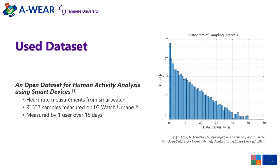To compare the considered methods, we applied them on a dataset called 'An Open Dataset for Human Activity Analysis Using Smart Devices.' The considered measurements include almost 92,000 samples measured on a smartwatch by one user over 15 days. On the right, you can see a histogram of the granularity of the measurement sampling intervals.